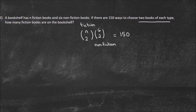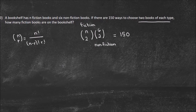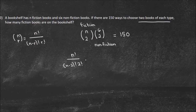The key was recognizing this is a combination. Now use the formula: n choose r equals n factorial divided by (n minus r) factorial times r factorial. So I'll have n factorial divided by (n minus 2) factorial times 2 factorial, multiplied by 6 factorial divided by (6 minus 2) factorial times 2 factorial.